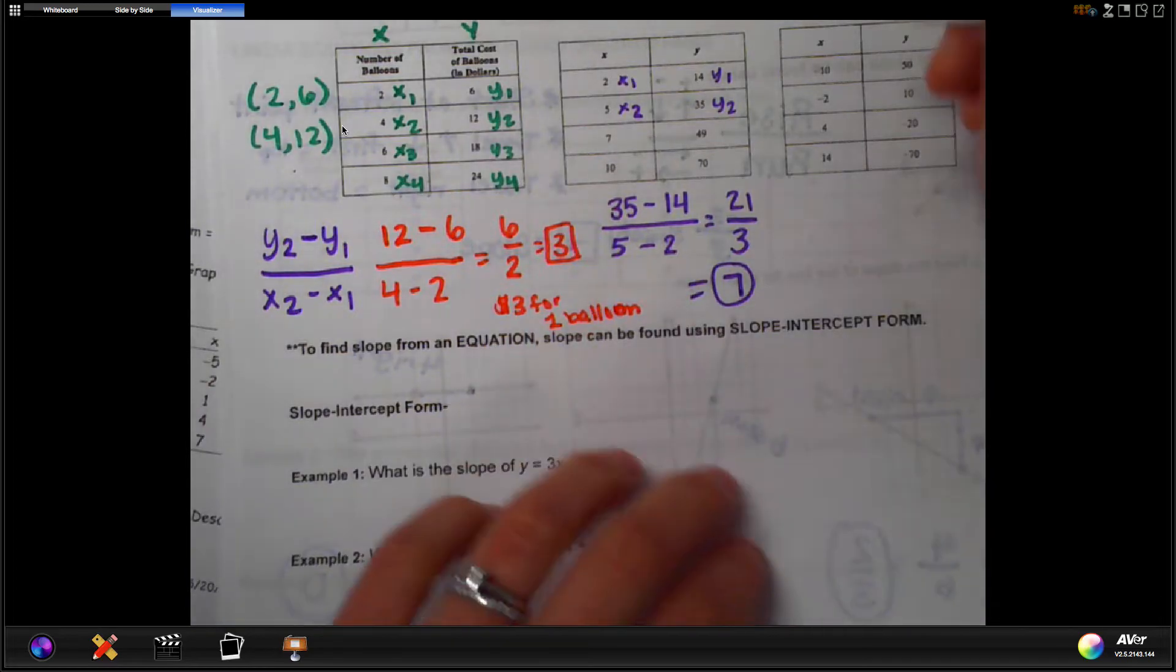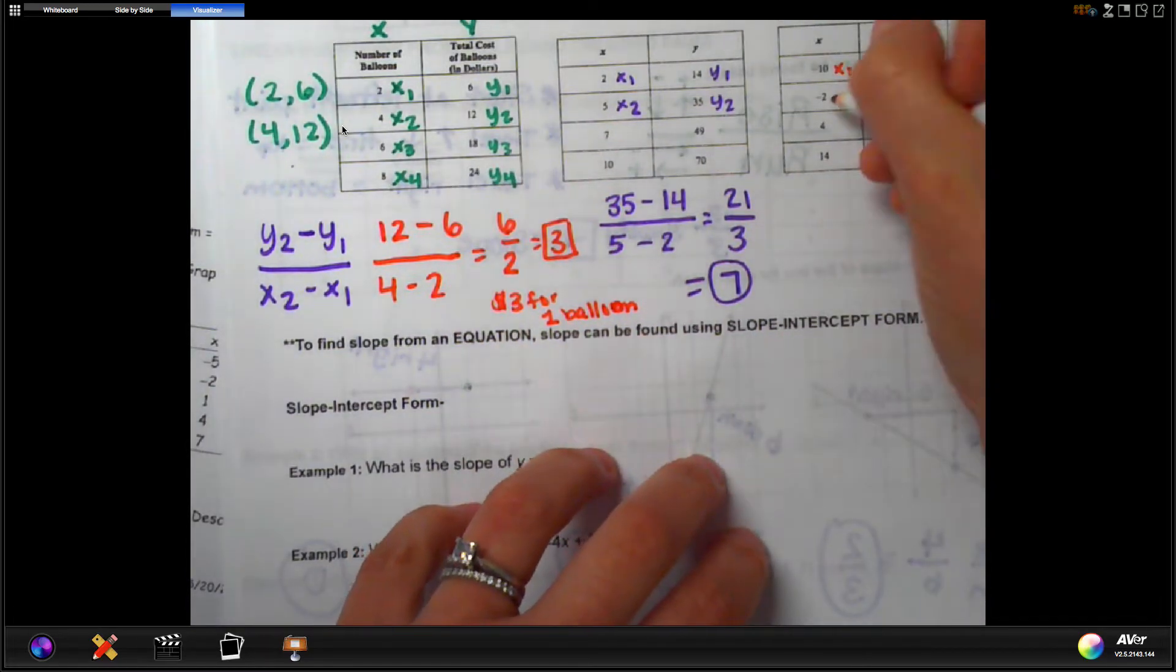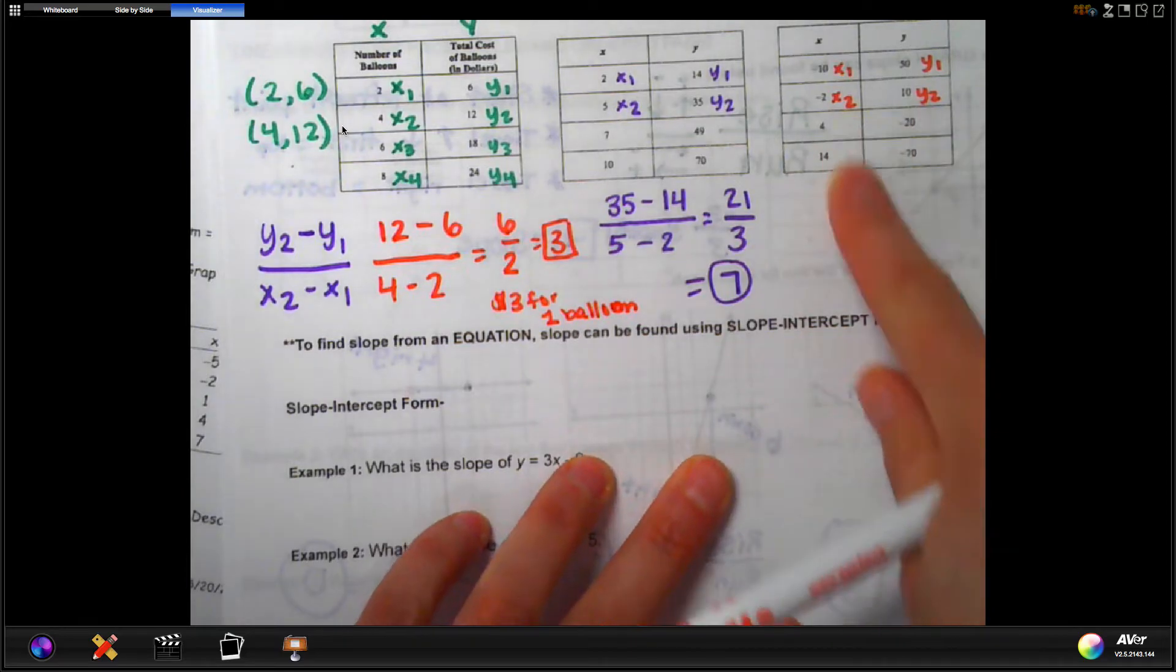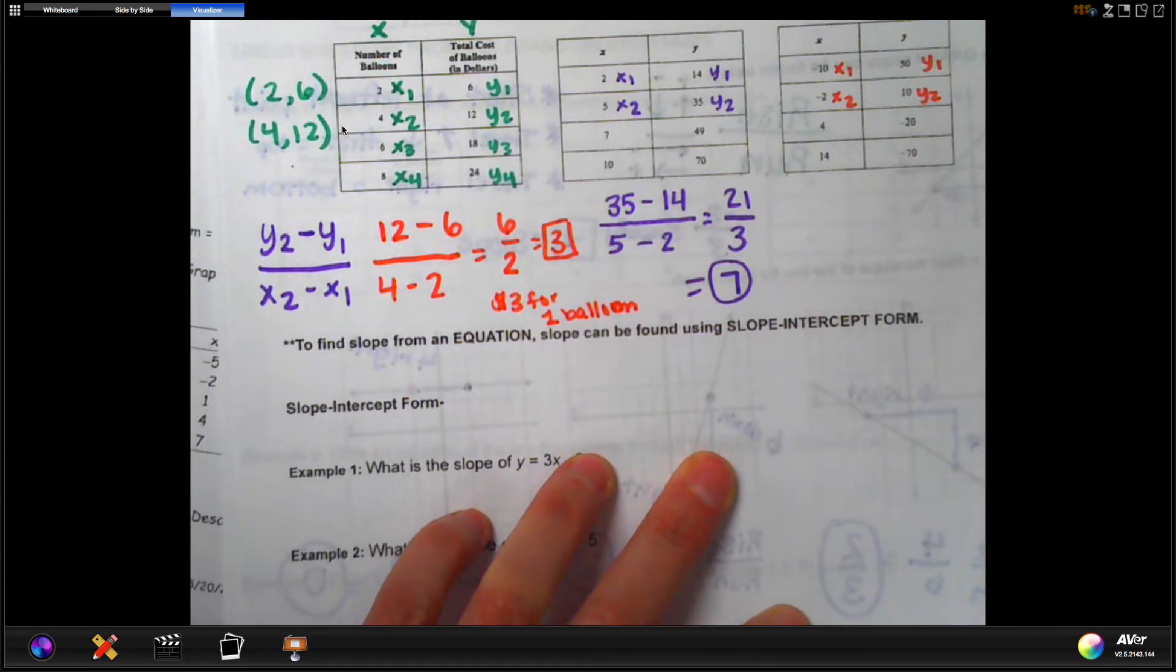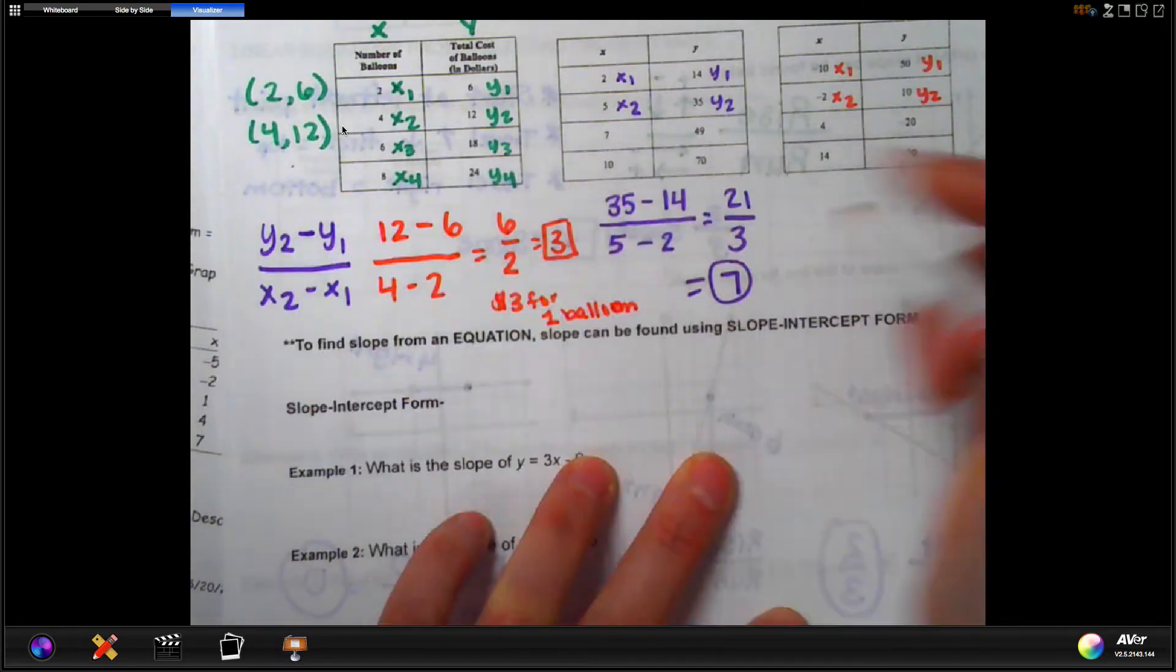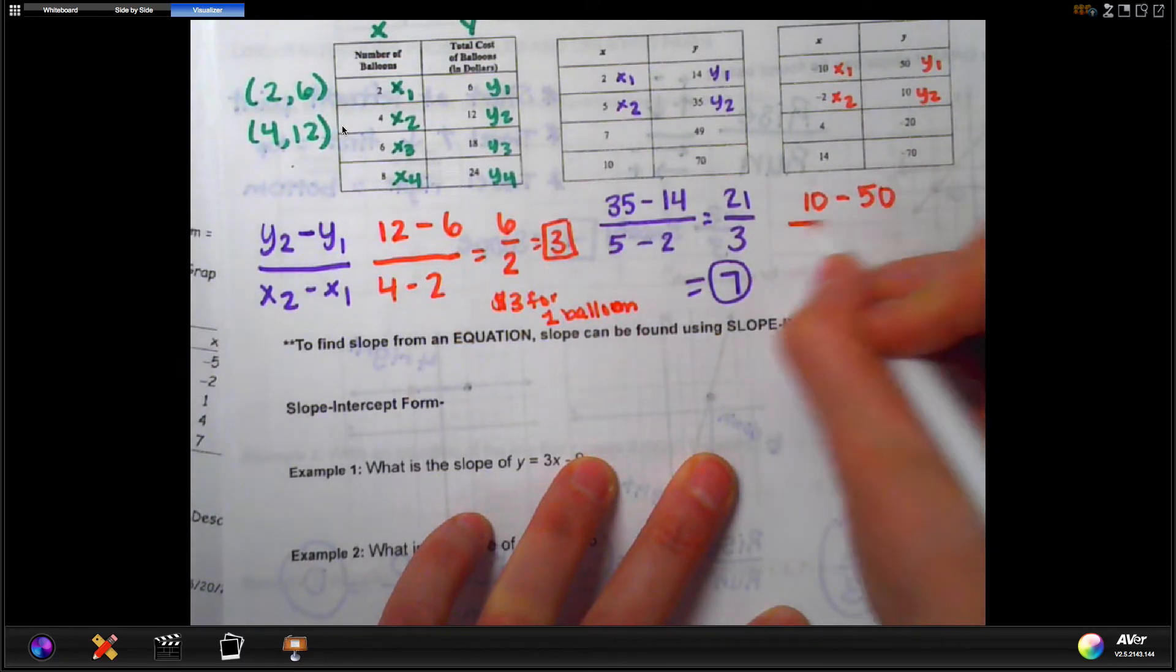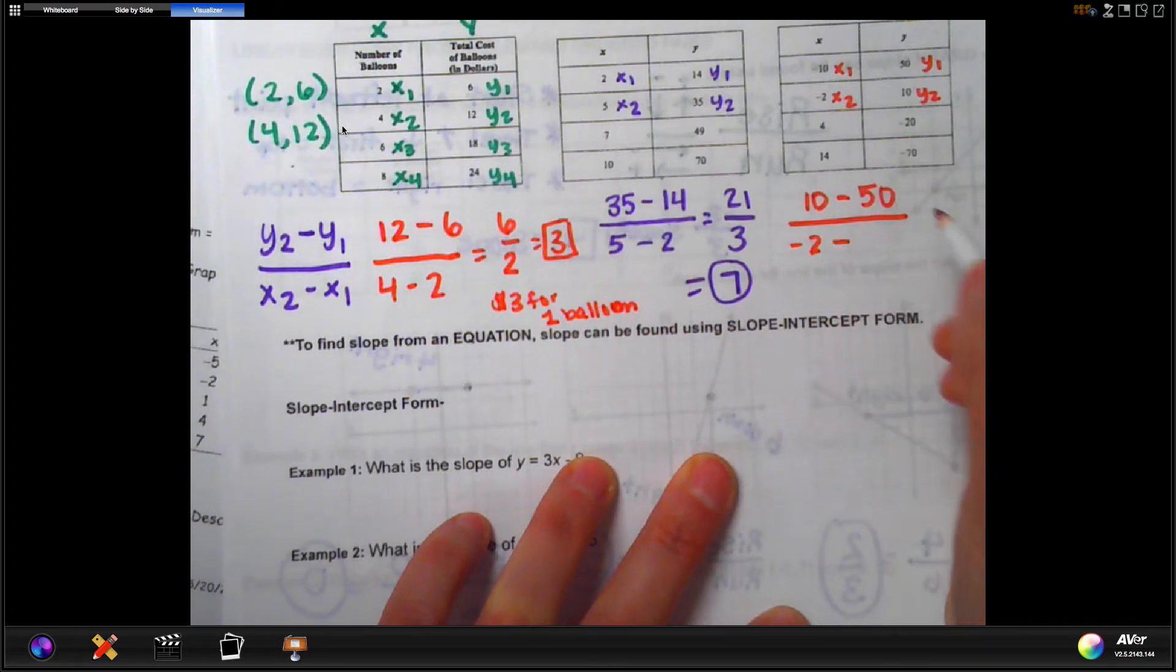Okay, so we have x1 is negative 10, x2 is negative 2, y1 would be 50, and y2 would be 10. Again, we have extra information that we don't need to use here. So we're going to start formula again. Again, y2 would be 10 minus y1 of 50.